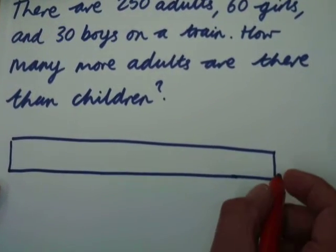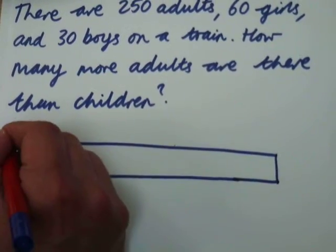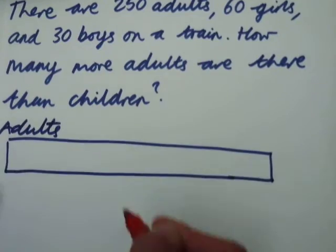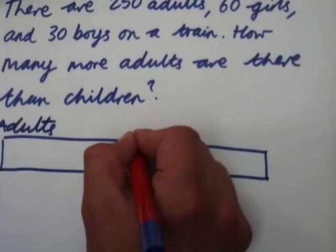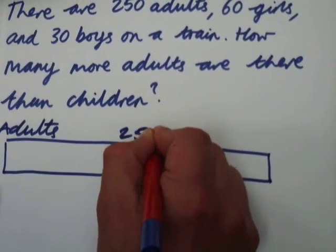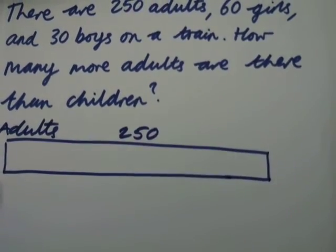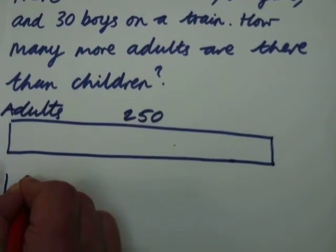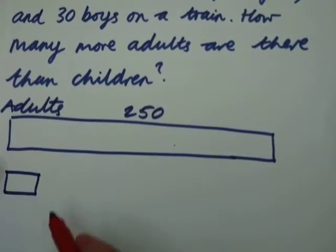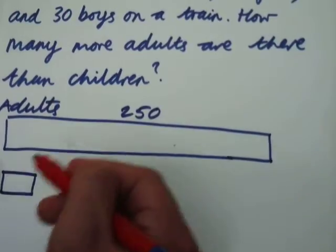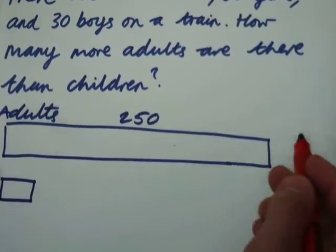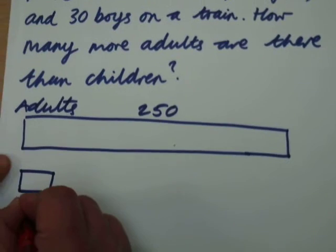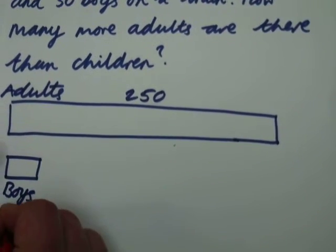So this bar at the top represents my adults, and as the question says there are 250 adults on the train. The next bit that I know is that there are 30 boys. I'm going to do it so it's one chunk of the 250. So we've got the boys there which are 30.